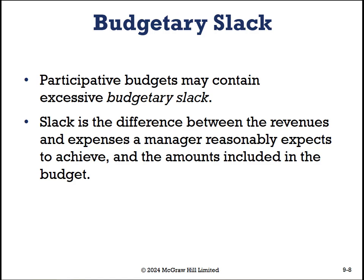Budgets prepared by lower-level managers cannot simply be accepted without review by higher-level management. Without a review system, participative budgets might contain excessive budgetary slack — defined as the difference between revenues and expenses a manager reasonably expects to achieve and the amounts included in the budget. For example, if lower-level managers think they can hit 100 million in sales, they might put down 80 million so that hitting 80, 90, or 100 million makes them look like superstars. So you have to analyze every line and ask: is this reasonable, is this feasible, and how much slack is in the budget?